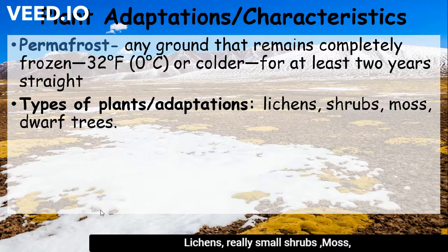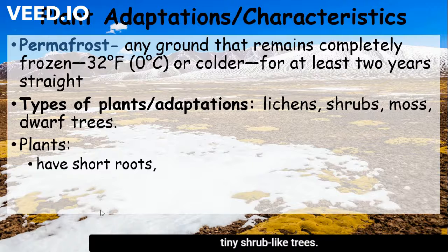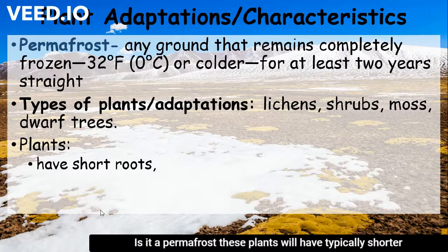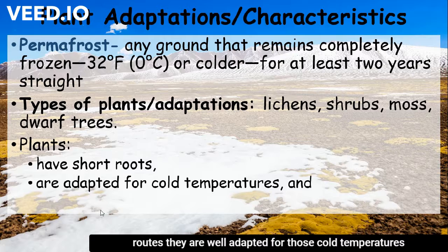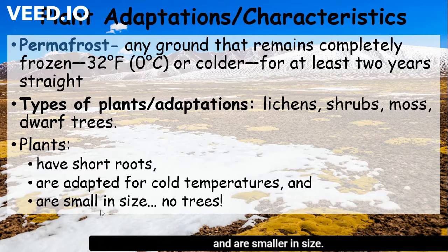We have lichens, really small shrubs, moss which grows on rocks and other things, and dwarf trees which are little tiny shrub-like trees. Because of the permafrost, these plants will typically have shorter roots. They are well adapted for those cold temperatures and are smaller in size.